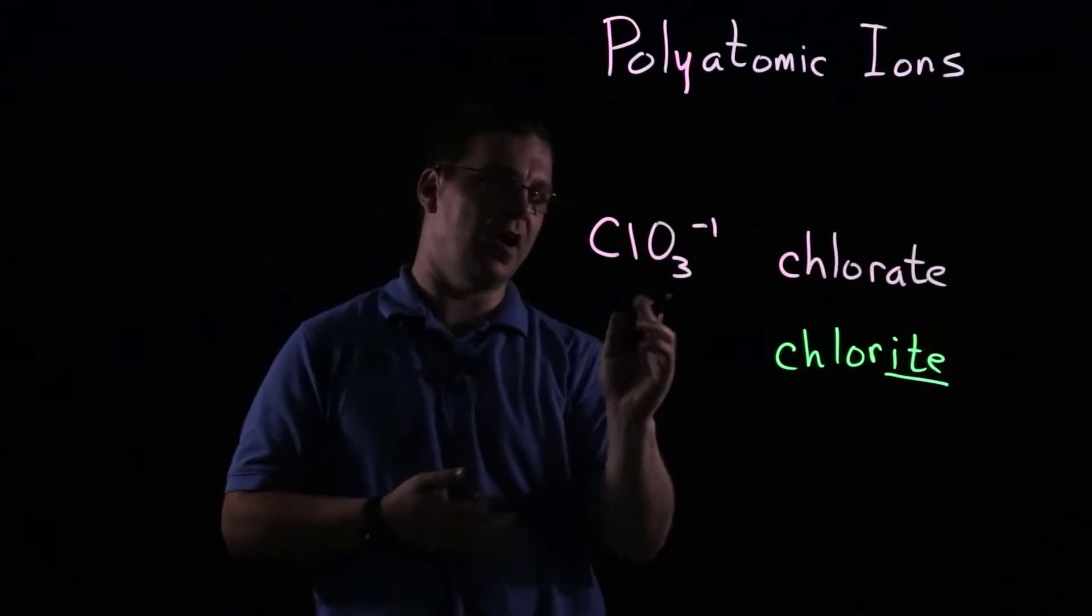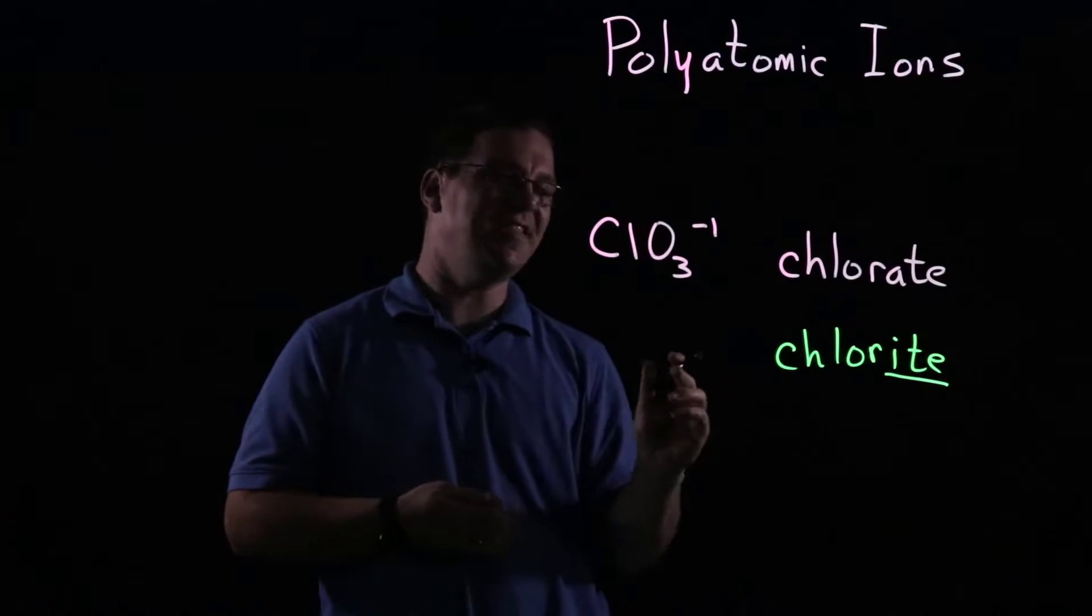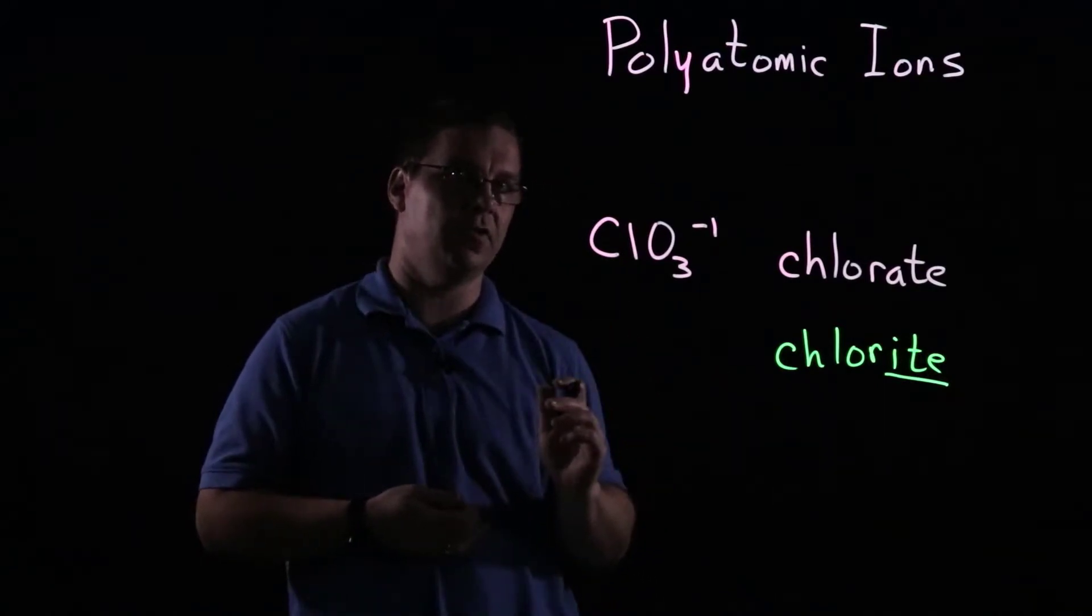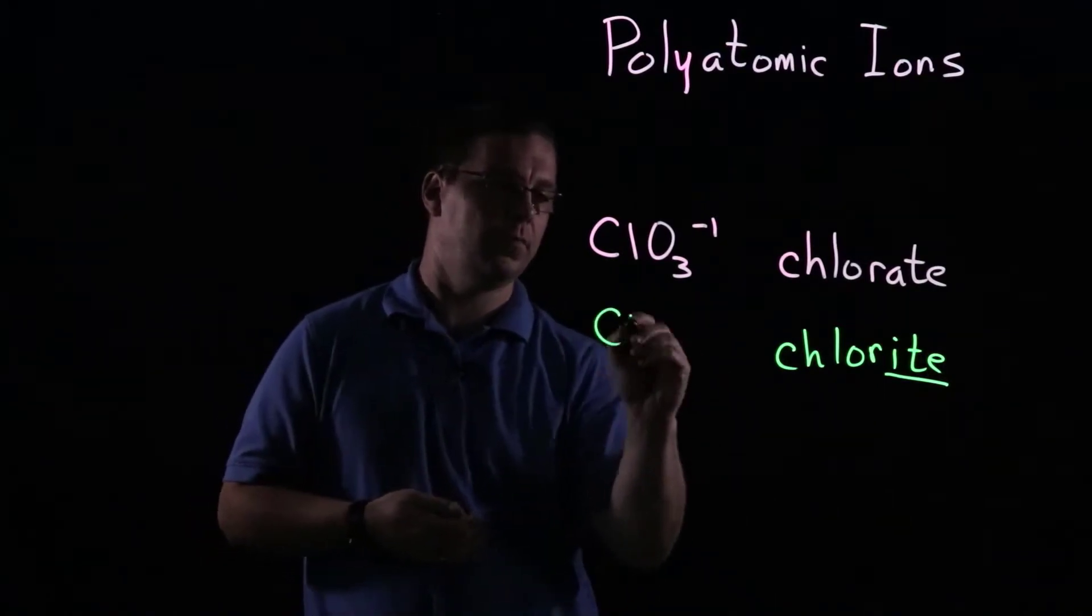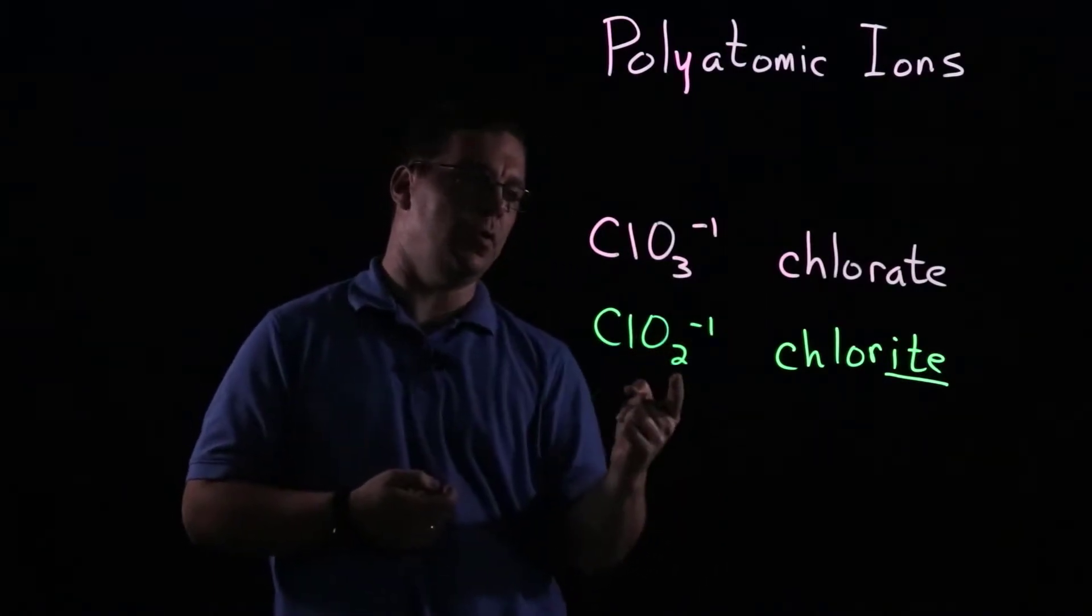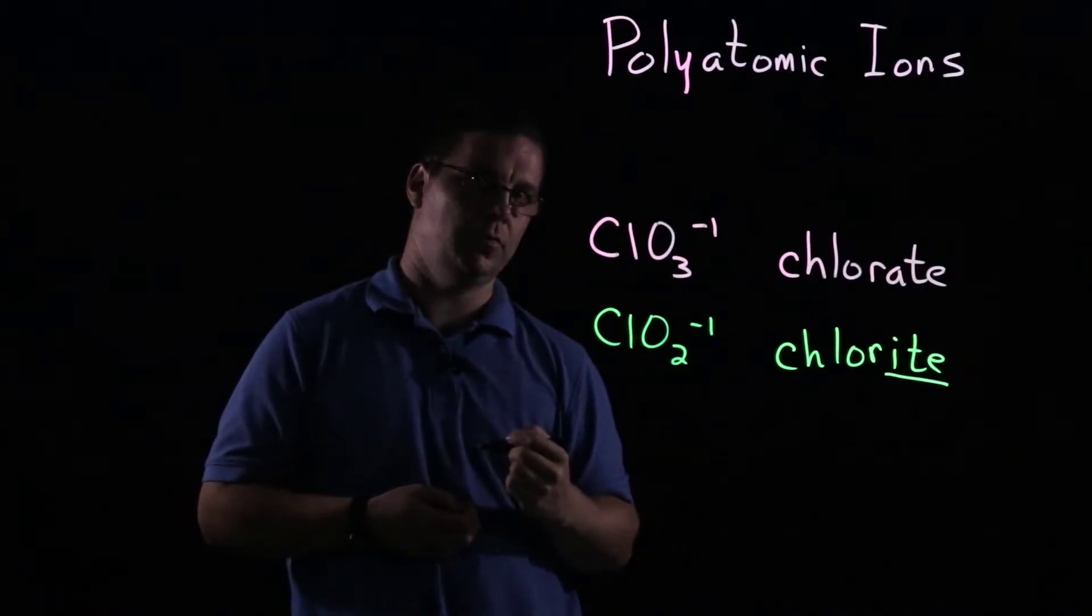So that's still cluing us in that oxygen is going to be present, but what it does is it changes the number of oxygens that are present. So chlorite has the formula ClO2 with a minus one charge.